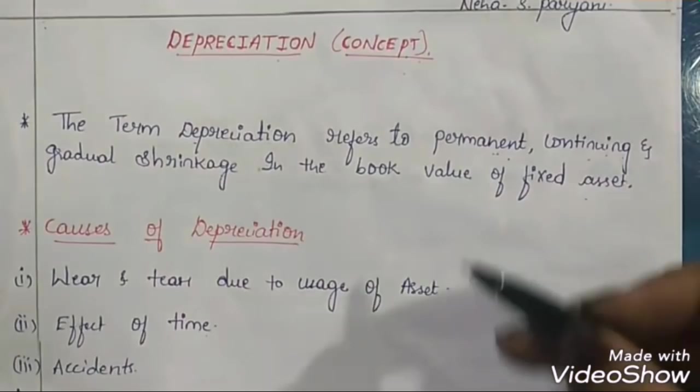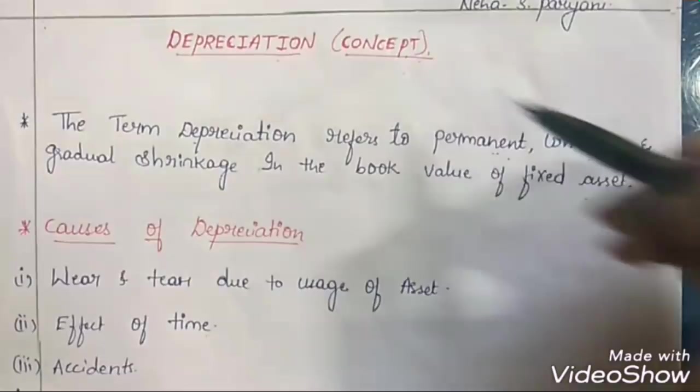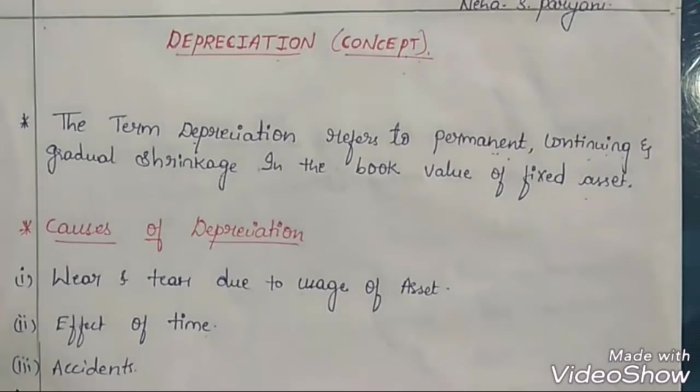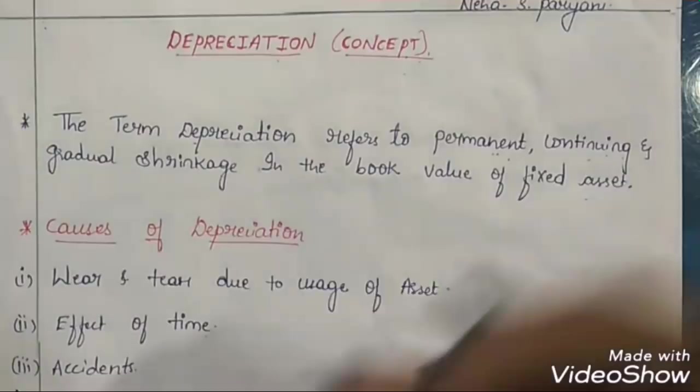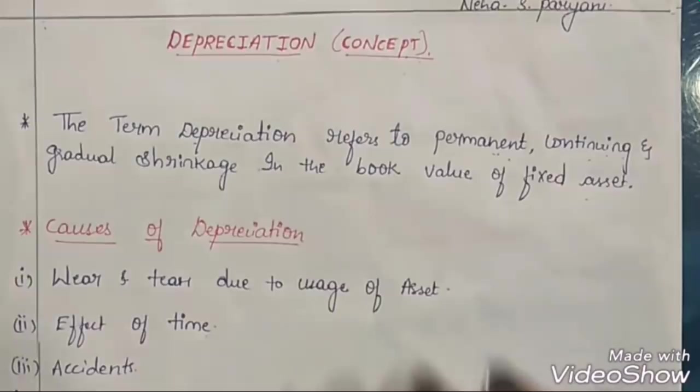Depreciation is continuous — the value of the asset keeps on decreasing every year. Depreciation is a continuous process. You may use the fixed asset or you may not use it; once you have purchased it, its value goes on decreasing. In some cases, the value of a fixed asset may increase, as in the case of land and buildings.